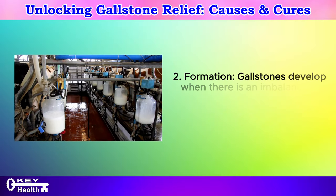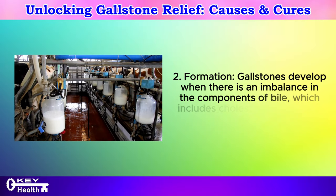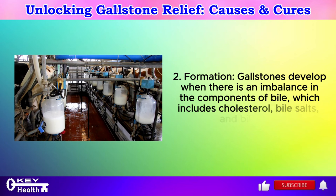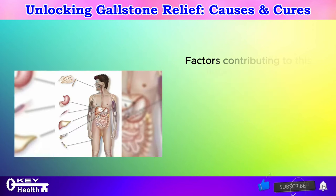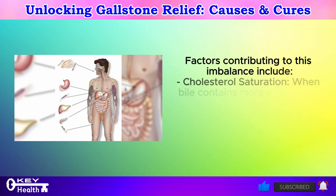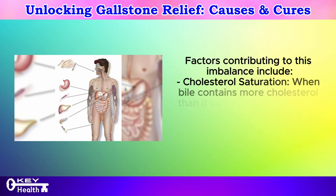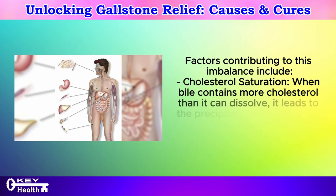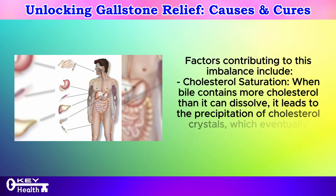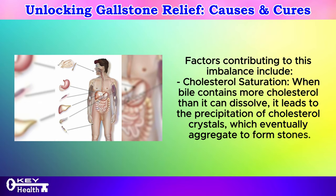Formation: Gallstones develop when there is an imbalance in the components of bile, which includes cholesterol, bile salts, and bilirubin. Factors contributing to this imbalance include cholesterol saturation — when bile contains more cholesterol than it can dissolve, it leads to the precipitation of cholesterol crystals, which eventually aggregate to form stones.